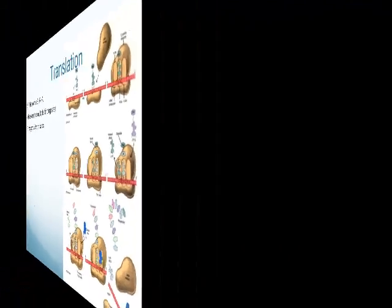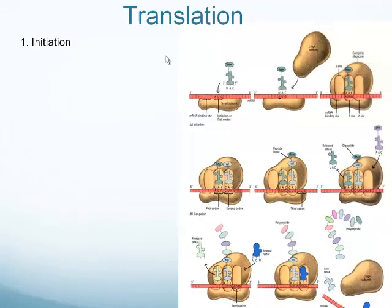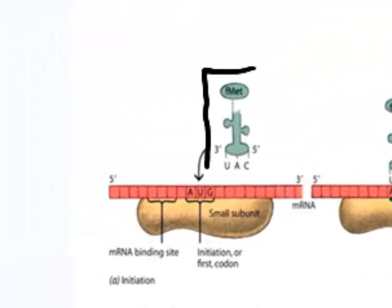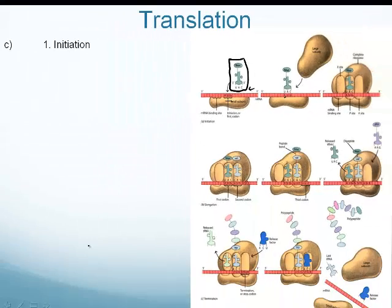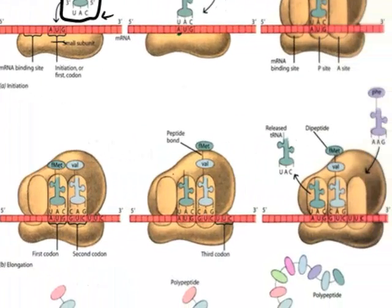There are three steps to translation, so let's write them down as a reference. The first step is initiation. During initiation, we have our methionine amino acid connected to a tRNA molecule. Remember, the whole reason we have tRNA is to bring the amino acid to the mRNA in the correct sequence. We have our start codon AUG and our start anticodon UAC — they're complementary — and this tells the ribosome where to begin. The start codon pairs with the anticodon of the tRNA, and that starts the whole process.